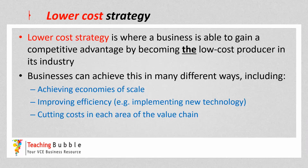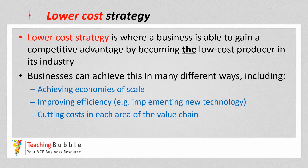It could be that the business improves their efficiencies by implementing technology into certain areas of their business, or by implementing lean management principles. Or it could be that the business simply looks to cut costs in as many areas of the value chain as possible as a way to be the low-cost producer in the industry.